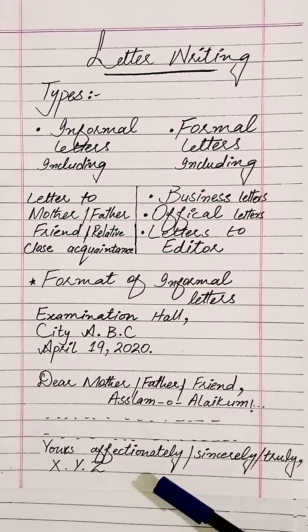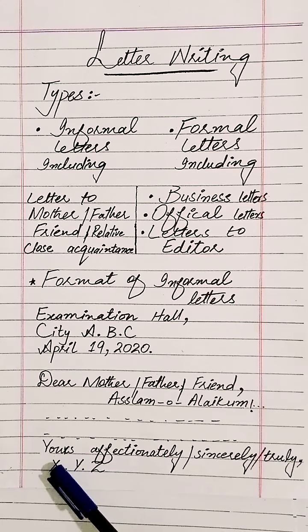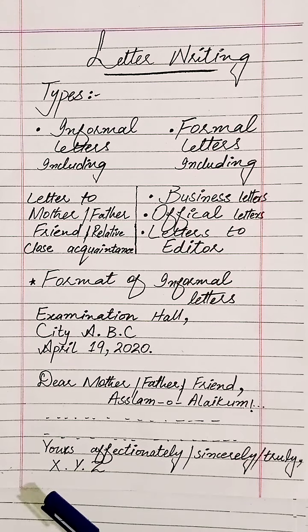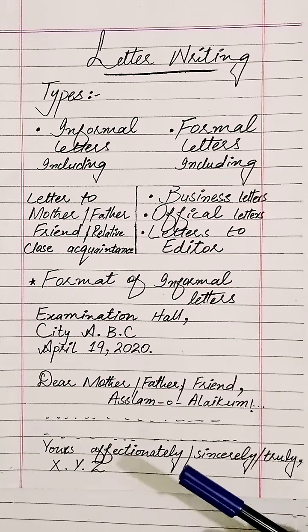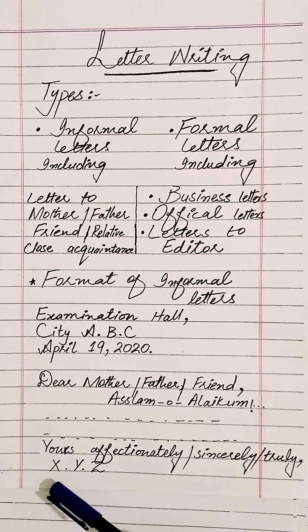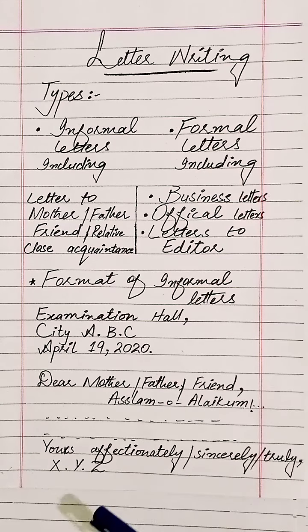Here, you will write 'Yours affectionately,' 'Yours sincerely,' or 'Yours truly.' Many students write an apostrophe before 'yours affectionately' — that is wrong. You have to write 'Yours affectionately,' and then put a comma. In the next line, you will write in capitalization: X.Y.Z. After writing Z, you don't put a comma or full stop.